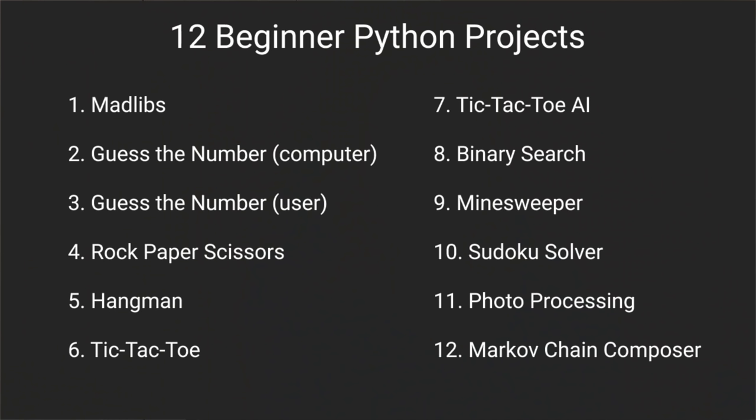Now a couple of notes before we begin. Here's a list of all the projects. These projects are in order from what I consider to be the easiest, most beginner friendly to the most complex. They'll range from Mad Libs, which is a string concatenation, to an unbeatable tic tac toe AI to photo editing in Python.